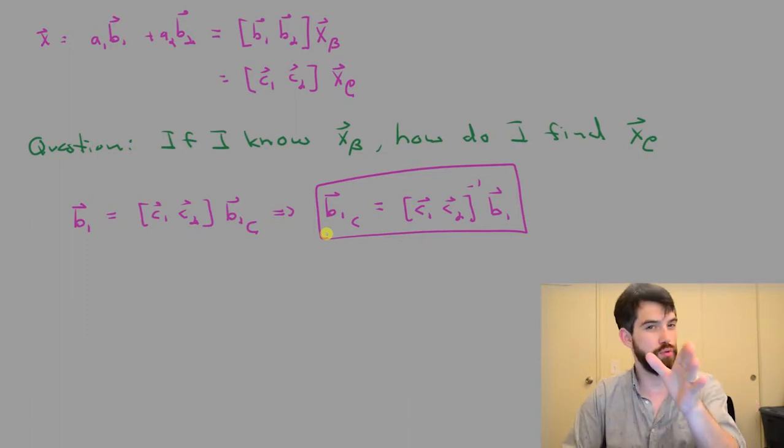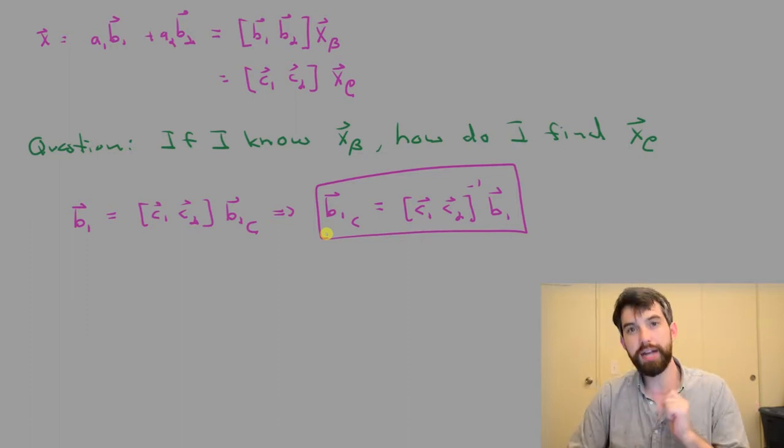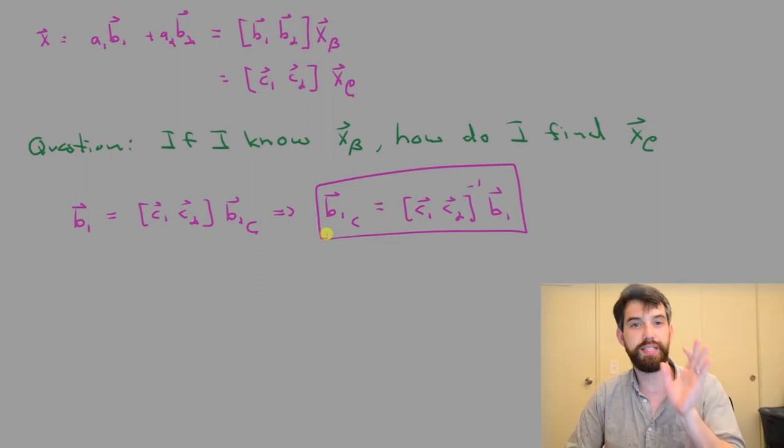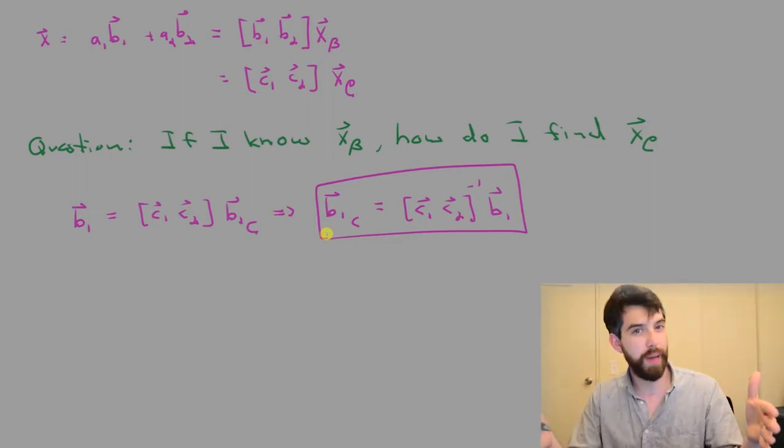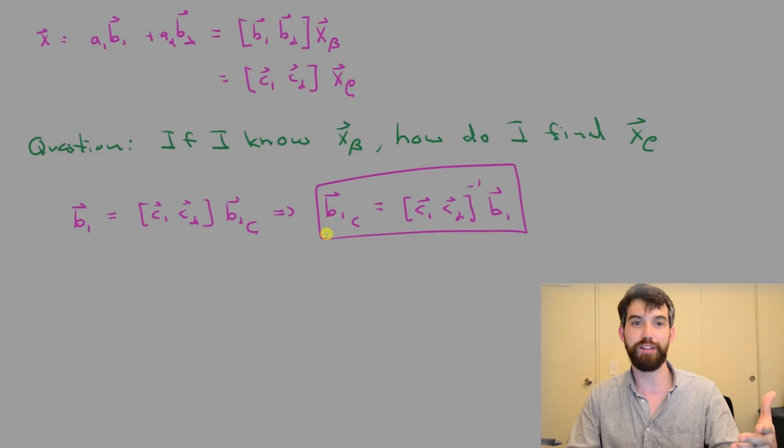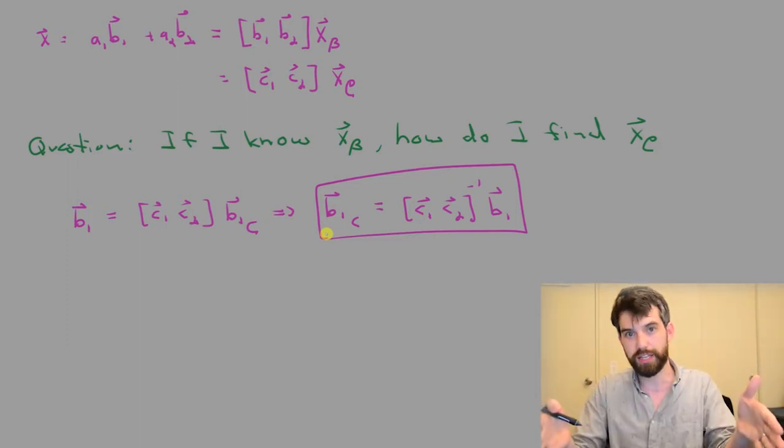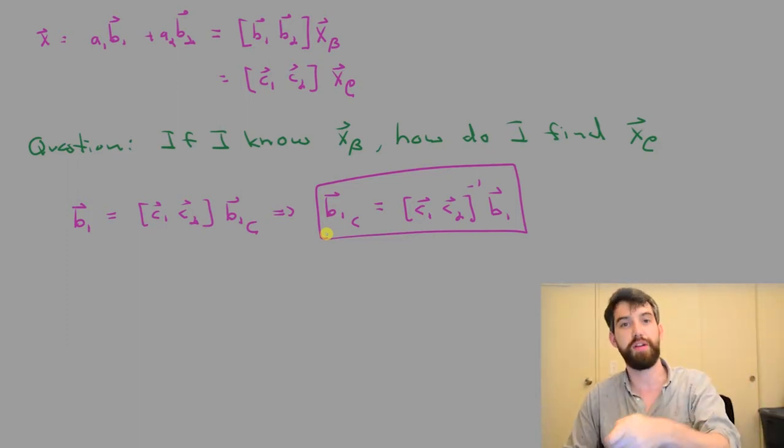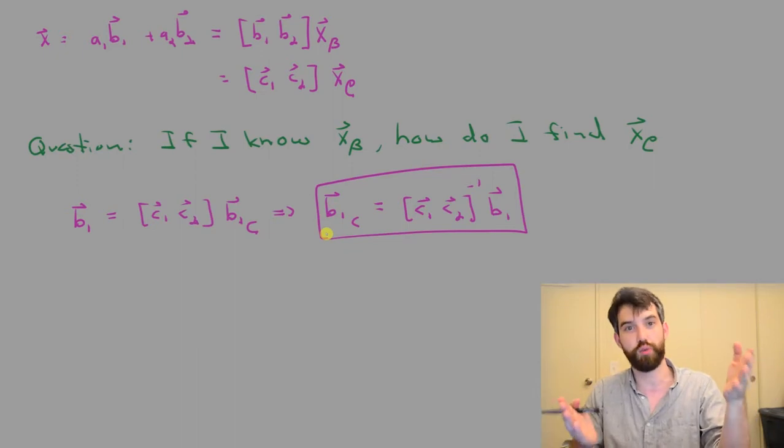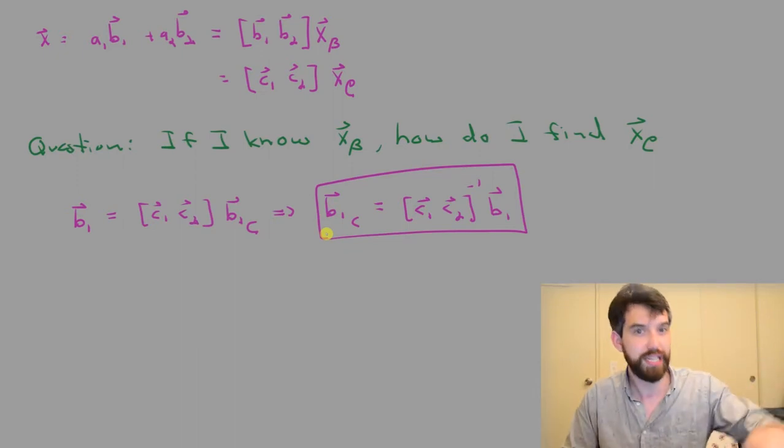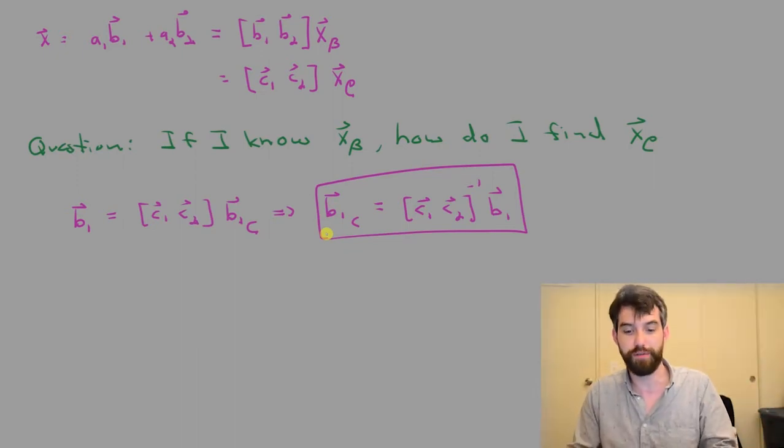By the way, you might wonder, one second, do you know that it's invertible? Indeed I do. I know that the C vectors are linearly independent. And so one of the conditions of that is that if I put into a matrix, that that matrix has a leading one in every row and column. Indeed it's going to be a square matrix. And that is precisely equivalent to the condition of it being invertible. So I'm not violating any rules when I do this.